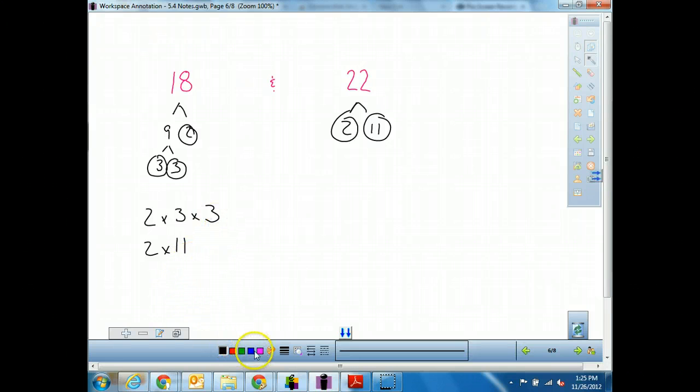I go through and I figure, do they have anything in common? Yep. I'm going to combine these twos and just count them once. So I got a 2. And then I have to pick up these last three numbers. I've got a 3 times a 3 times an 11. And when I take 2 times 3 times 3 times 11, 2 times 3 is 6, 6 times 3 is 18, 18 times 11, you should get 198 as your least common multiple. Least common multiple.